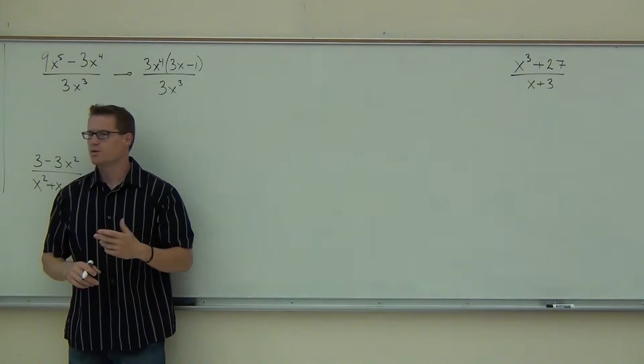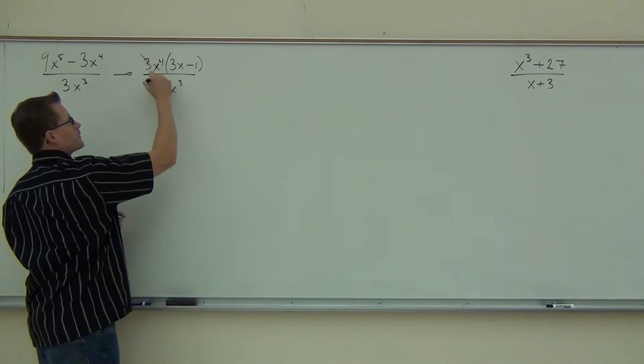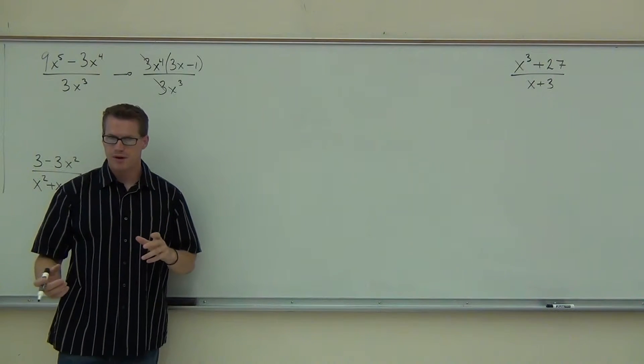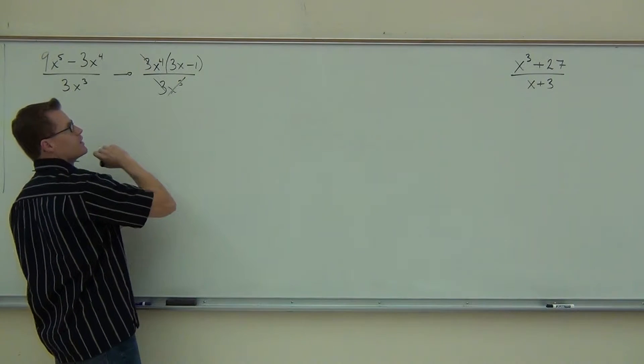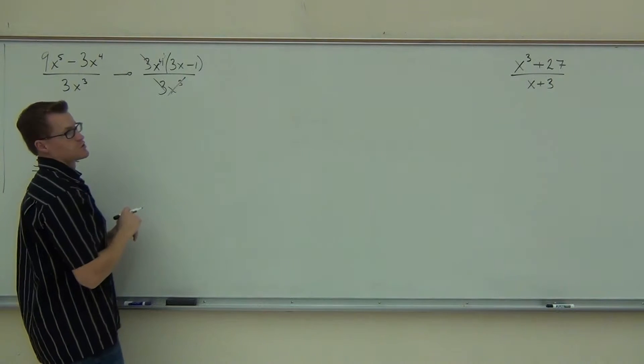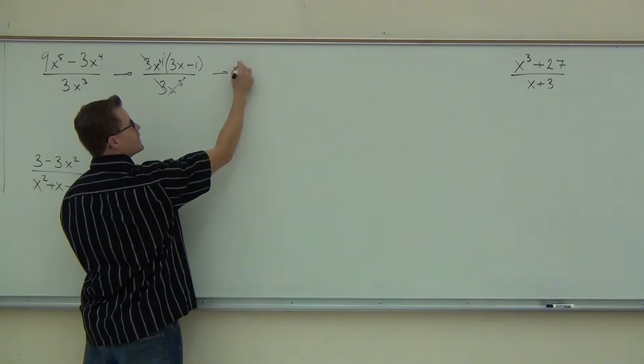This is like one of those ones we had yesterday, only kind of in reverse actually. The threes are definitely gone. The x to the cube and the x to the fourth, we can also simplify that. Those are factors in this case. So x to the third is gone. The x to the fourth becomes just x to the first power.